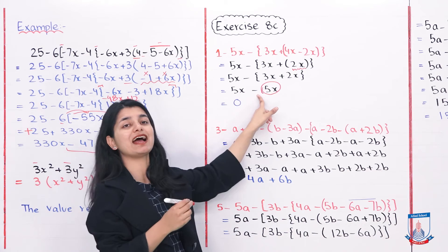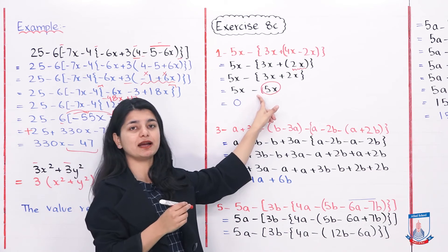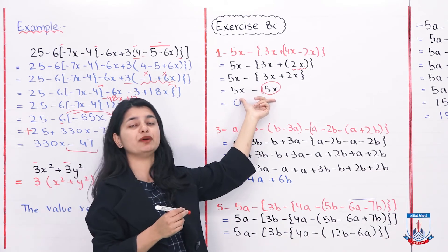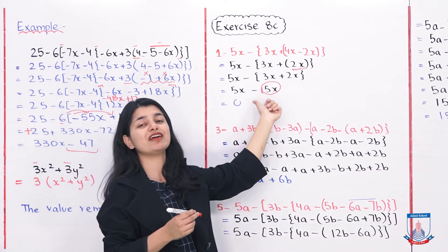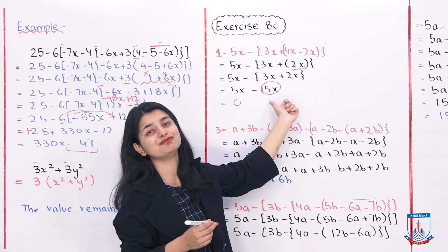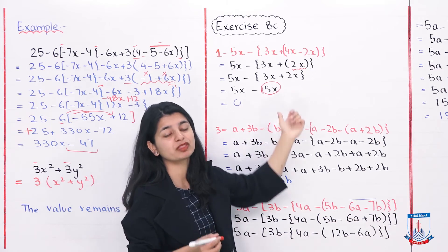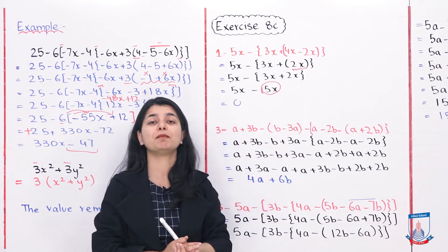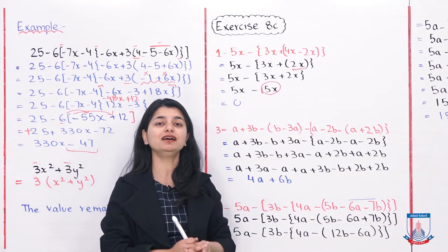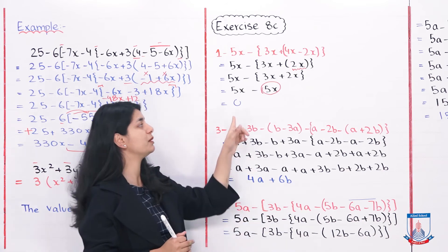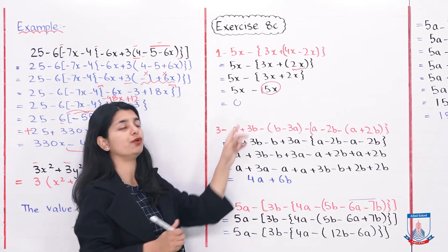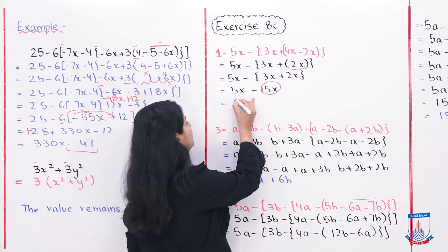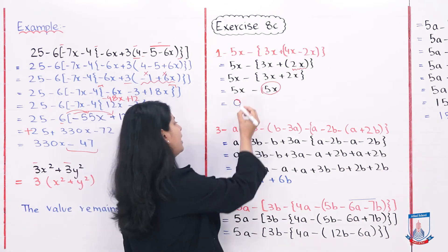The next step is opening this bracket. Outside the bracket there is a plus sign, so multiplying the plus sign with the inside plus 2x keeps it as 2x. After opening the bracket we have 3x plus 2x. Now 3x plus 2x is 5x, and 5x comes down as it is. So the overall equation becomes 5x minus 5x, and the answer is 0.